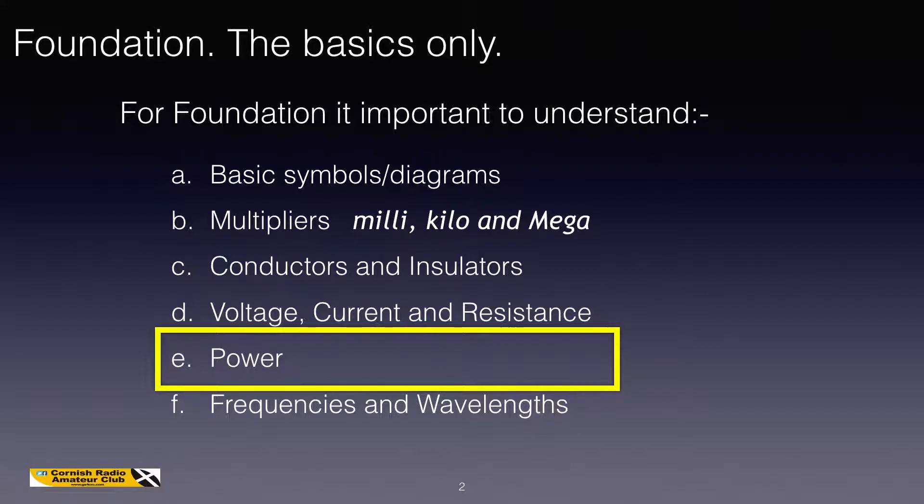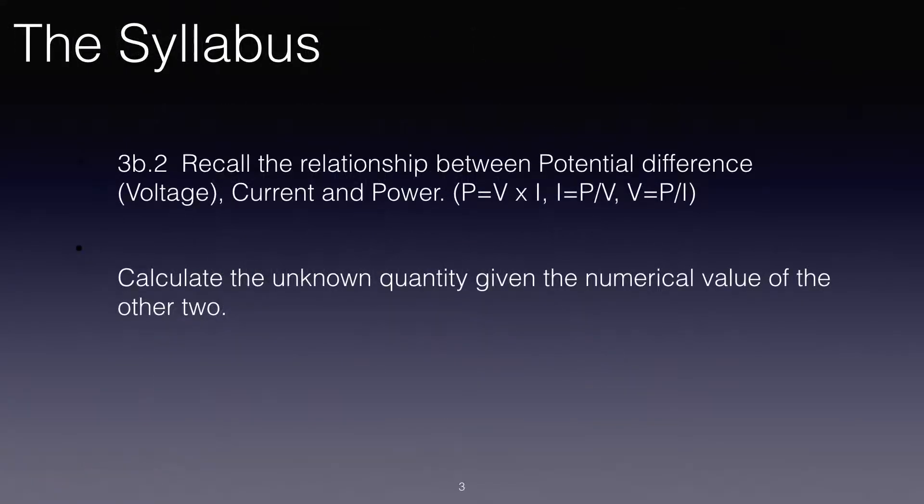Let's have a look and see what the syllabus says about power. It says recall the relationship between potential difference, voltage, current and power. And then it gives three forms of a formula: P equals V times I, I equals P over V, and V equals P over I. And the second part says calculate the unknown quantity given the numerical value of the other two.